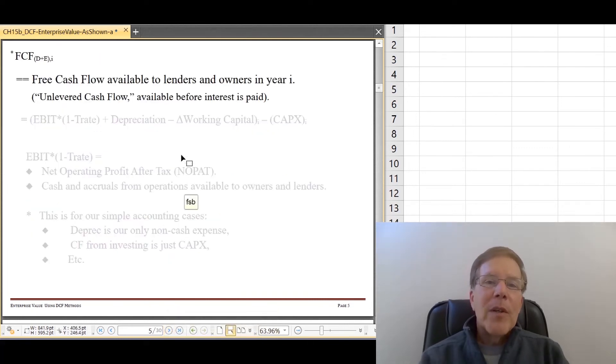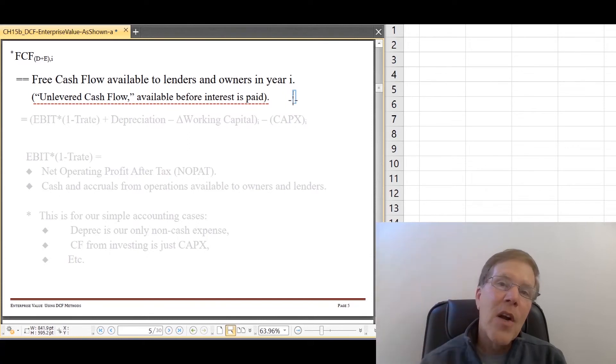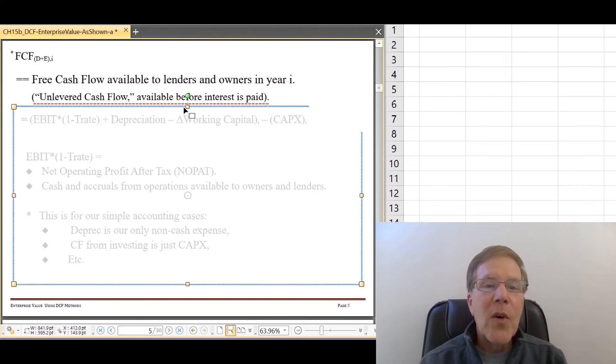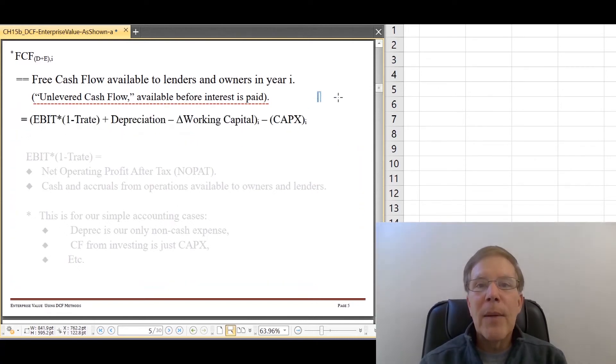So what do we mean by this free cash flow to everybody in year i? That's going to be what we called in the last chapter our unlevered cash flow. That's the cash flow available from operations before any interest is paid to the lender. So it's not net income. It's going to be higher up the income statement. And of course, we're going to be morphing cash and accruals from the income statement into just cash, something like cash flow from operations. So what we learned in the last chapter is that for the cases we'll be looking at, that turns out to be equal to EBIT times one minus the tax rate plus depreciation minus changes in working capital plus capital expenditures in that year i, the year that we're looking at.